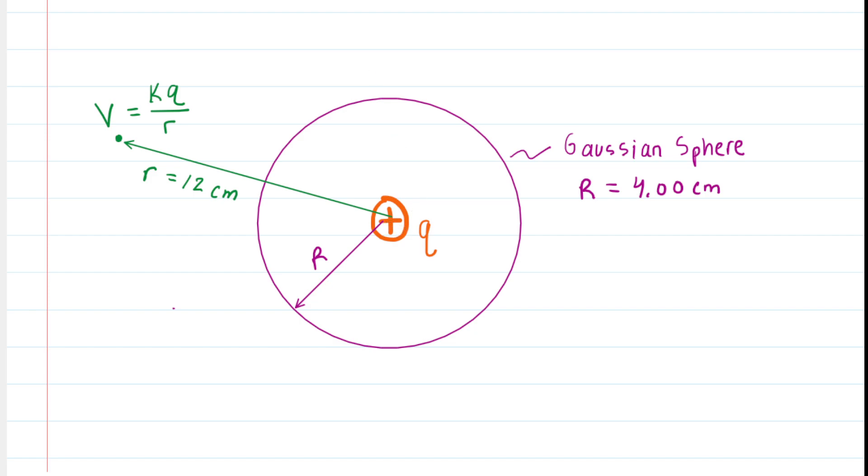But that's where Gauss's law is going to help us out. Gauss's law, as you may recall from an earlier chapter, tells us that the electric flux passing through that purple Gaussian sphere would equal the charge enclosed by the purple Gaussian sphere. Notice that the charge enclosed by the Gaussian sphere is that orange charge marked q divided by a fundamental constant.